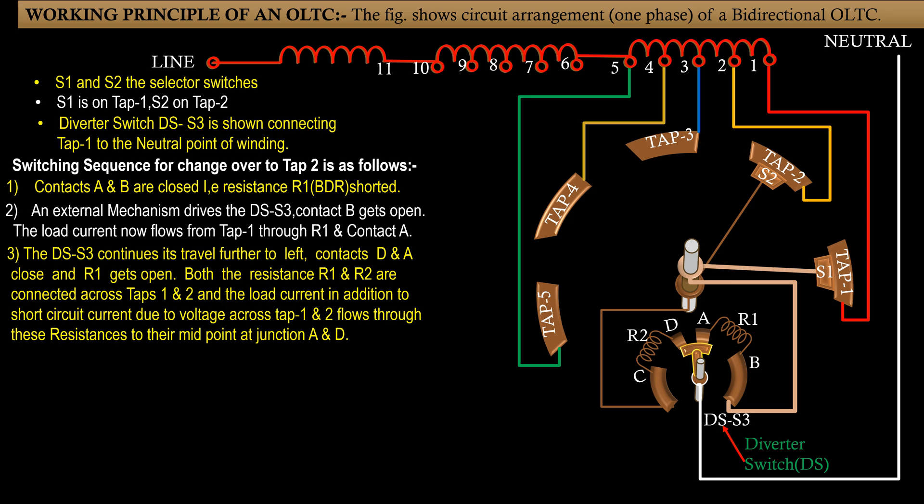Both the resistors R1 and R2 are connected across tap 1 and tap 2 and the load current in addition to short circuit current due to voltage across tap 1 and tap 2 flows through these resistances to their midpoint at the junction of A and D.